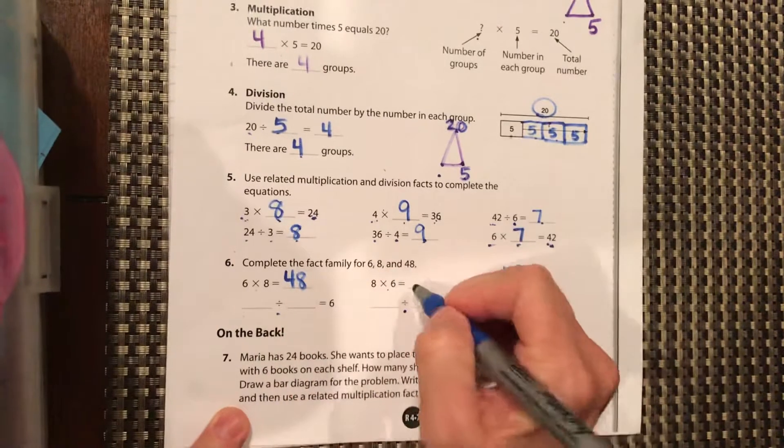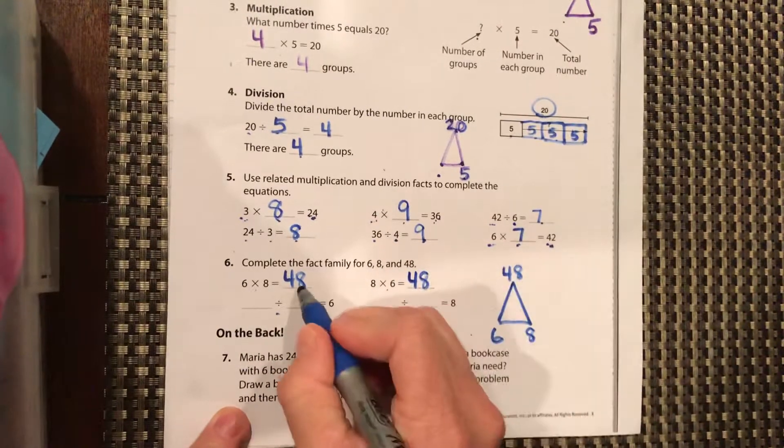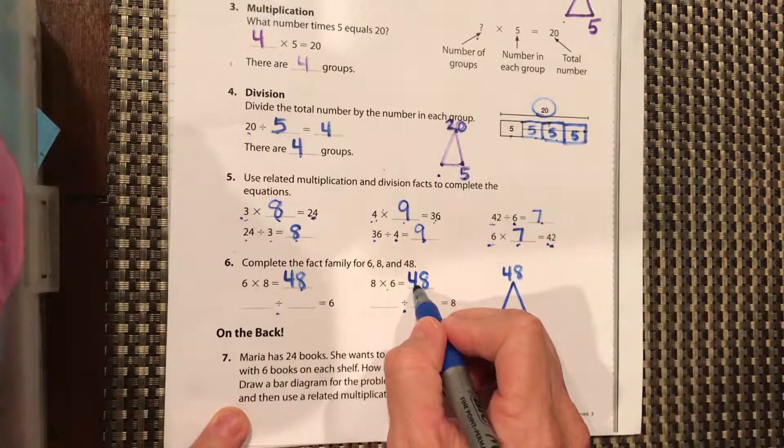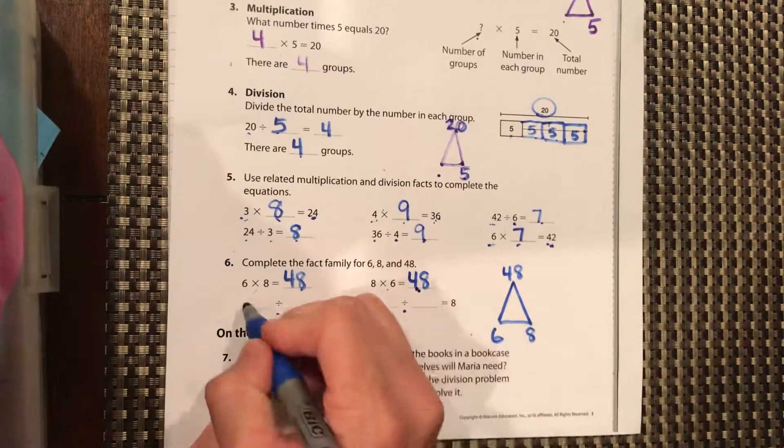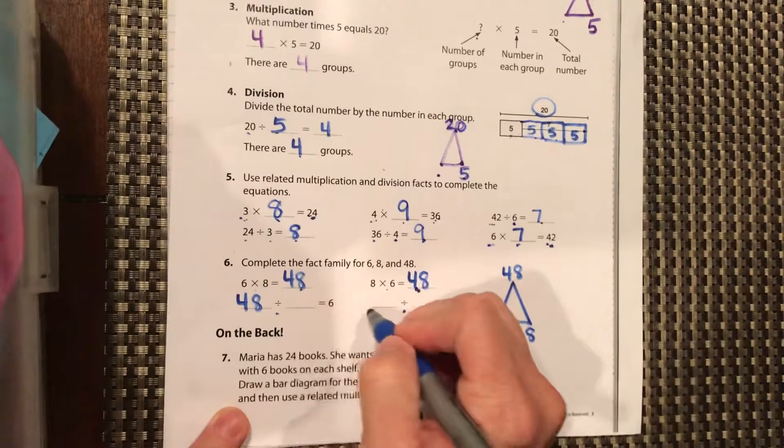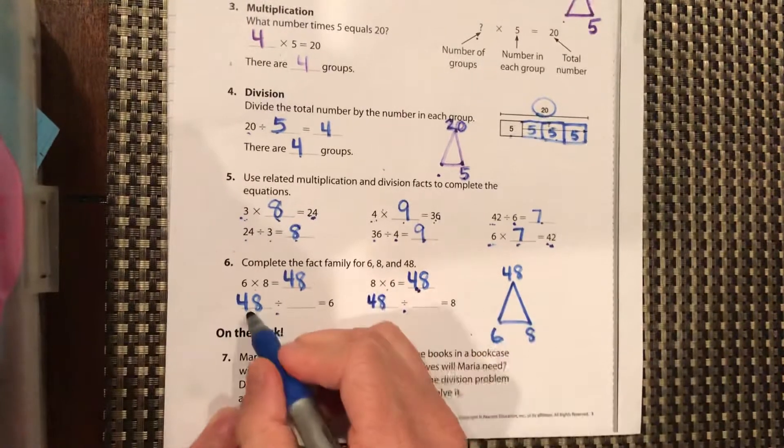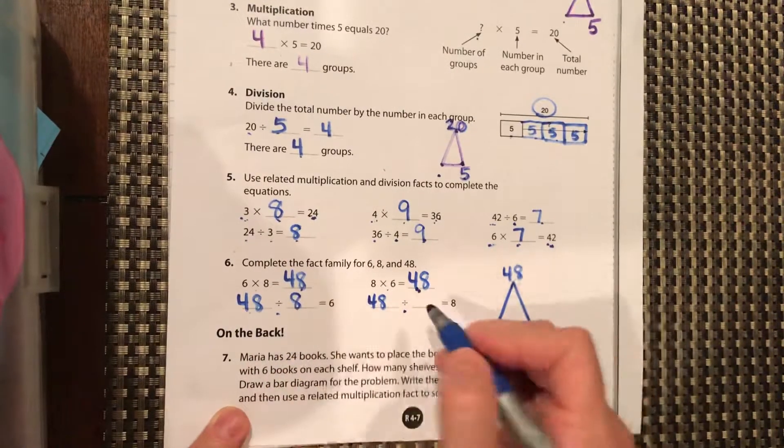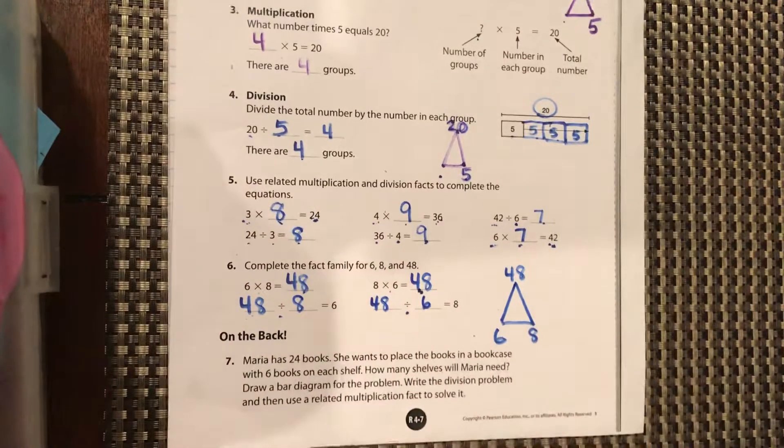So you should have 48. Remember, your product, the biggest number, is last in your multiplication and it's first in your division. So 48 divided by eight equals six, and divided by six equals eight.